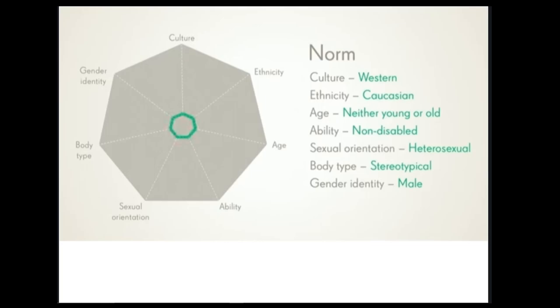This is the bad kind of identity politics. I do want to flag in this expression of the norm, which is their statement about what their zero on all of these scales is. So they have culture is Western. Ethnicity is Caucasian. Does it mean that they listen to both kinds of music, country and Western? Unfortunately, it doesn't actually mean people from the Caucasus. It means white people. Age, neither young nor old, which doesn't mean middle-aged. It means 30-ish. Ability, non-disabled. Sexual orientation, heterosexual. Body type, stereotypical.